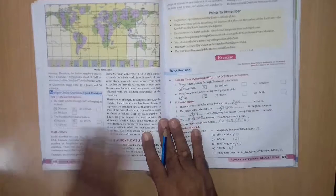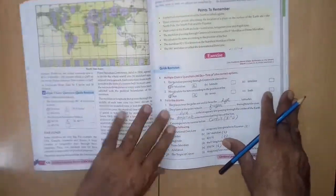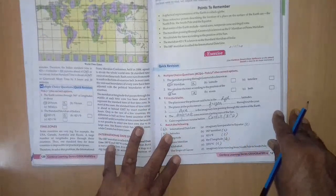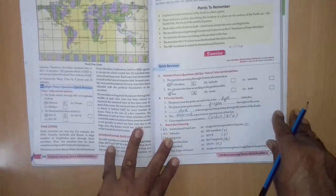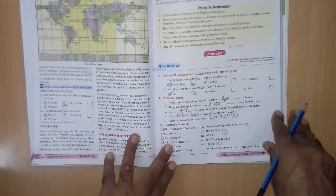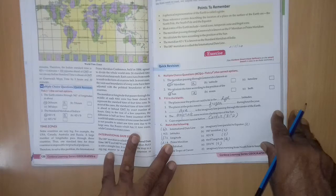Now, short options, multiple choice questions. Tick the correct options. 1st, the meridian passing through Greenwich is known as A 0 meridian, B latitude, C timeline. Right answer is A 0 meridian.